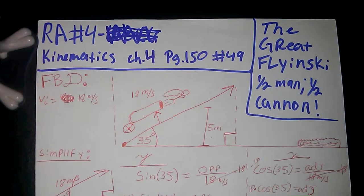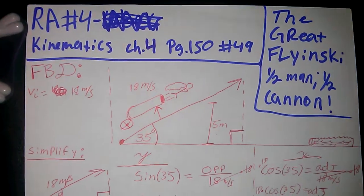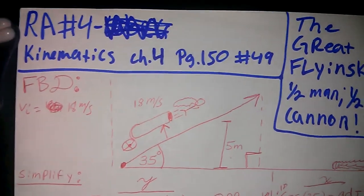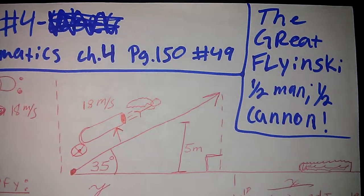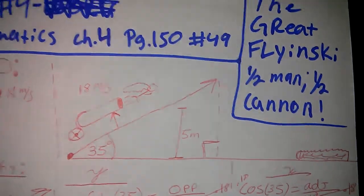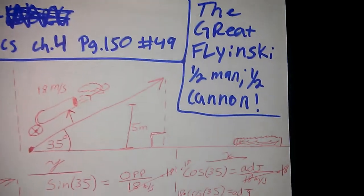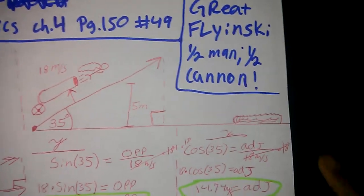Now, we have reassessment number four. Kinematics, chapter four, page 150, number 49. The Great Flyinski. Half man, half kid.